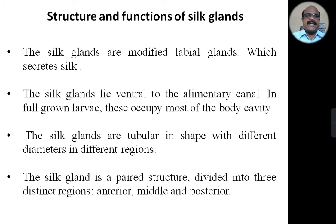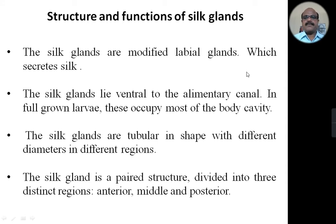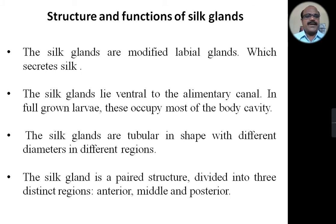Structure and Functions of Silk Glands. What are silk glands? Silk glands are modified labial glands which secrete silk. They are present in the silkworm. The silk glands lie ventral to the alimentary canal. In full-grown larvae, these silk glands occupy most of the body cavity. The silk glands are tubular in shape with different diameters in different regions.